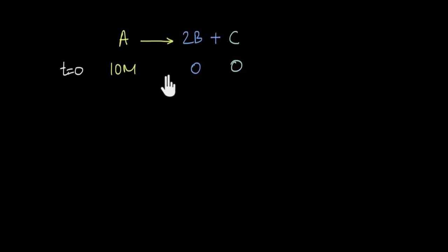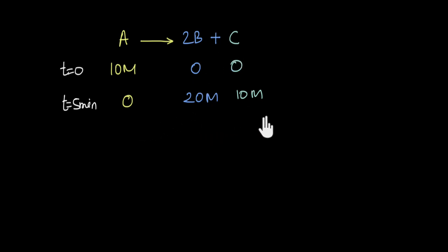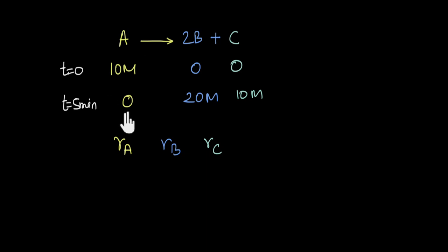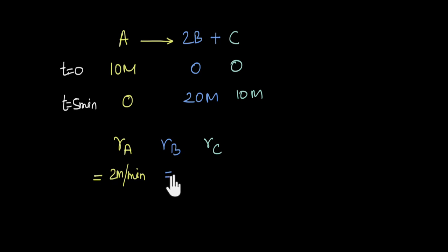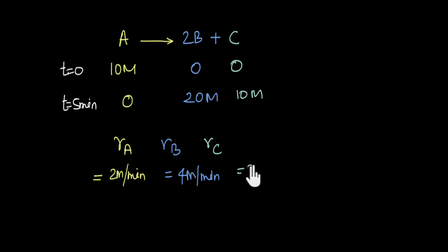Let us take one more example. Initially we have 10 molar of A, and after 5 minutes the concentration of A becomes 0, while B increases to 20 molar and C increases to 10 molar. The rate of disappearance of A = 10/5 = 2 molar per minute. The rate of appearance of B = 20/5 = 4 molar per minute. The rate of appearance of C = 10/5 = 2 molar per minute.